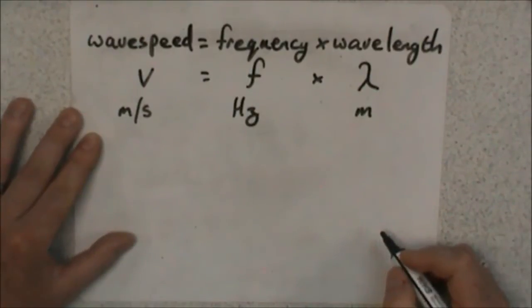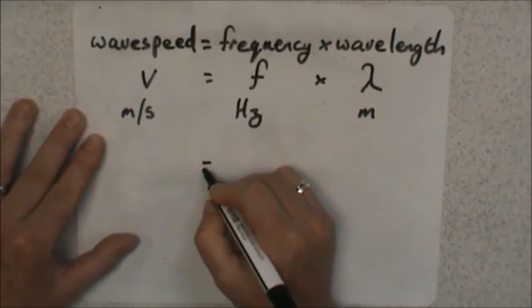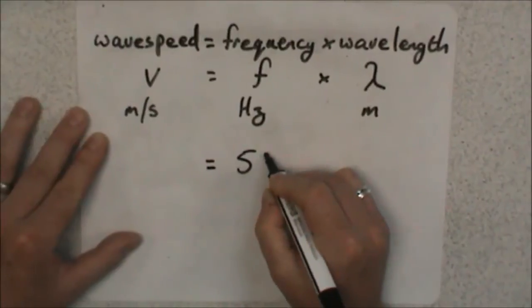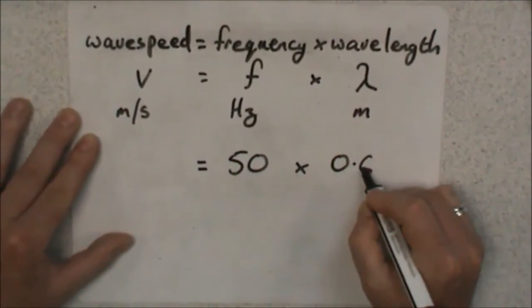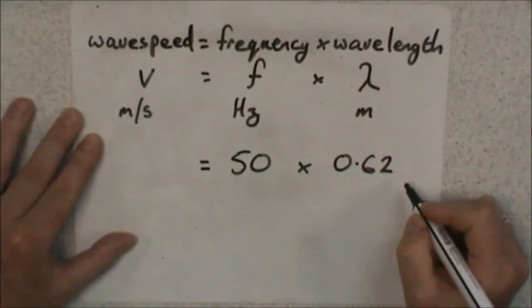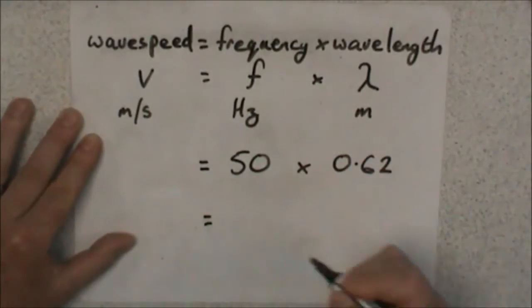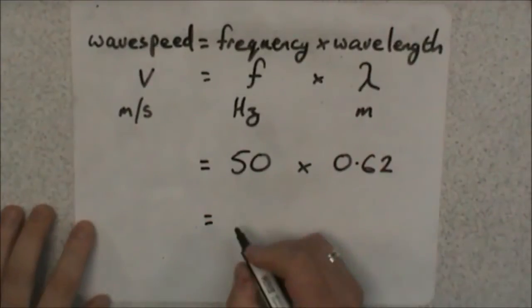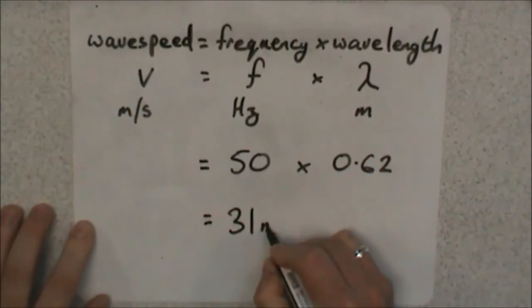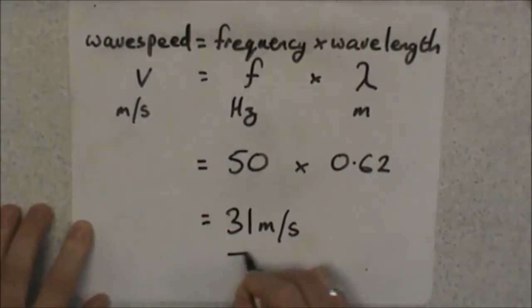So using our results, we have a frequency supply of 50 hertz and we had a wavelength of 0.62 meters. Now pause the video and do that calculation. So you should have also found out that we had a wave speed of 31 meters per second.